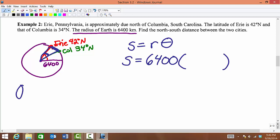So what we're going to have to do to find theta is first subtract 42 minus 34 to tell us what the angle measure in degrees would be between the two cities. And we get that that is 8 degrees.